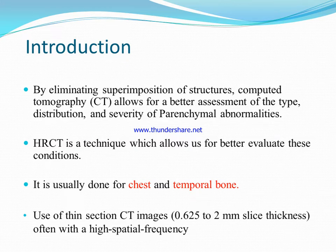HRCT is mainly done for two parts: first is the thorax and second is the temporal bone, because both have air cells. The slice thickness of HRCT is 0.6 to 2 mm.